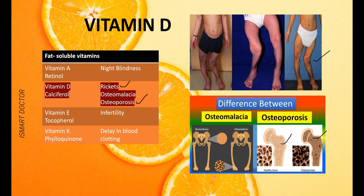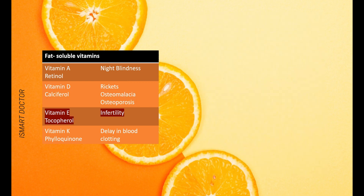Vitamin D has many different effects on the body — for example, chest pain and depression symptoms are also typically related to Vitamin D deficiency. Vitamin E deficiency causes mostly infertility — it is important for reproduction and fertility.